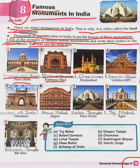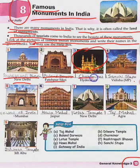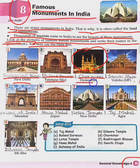Our third monument is Charminar. The spelling is C-H-A-R-M-I-N-A-R, Charminar. Charminar is situated in Hyderabad — H-Y-D-E-R-A-B-A-D.